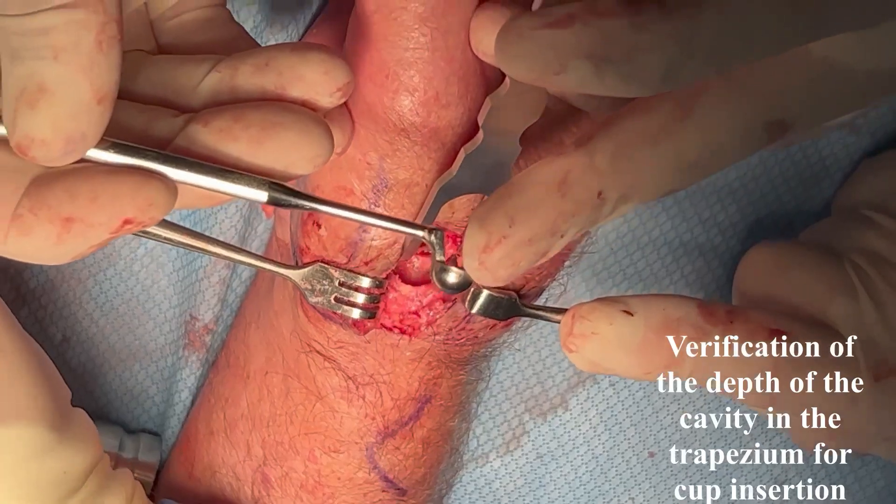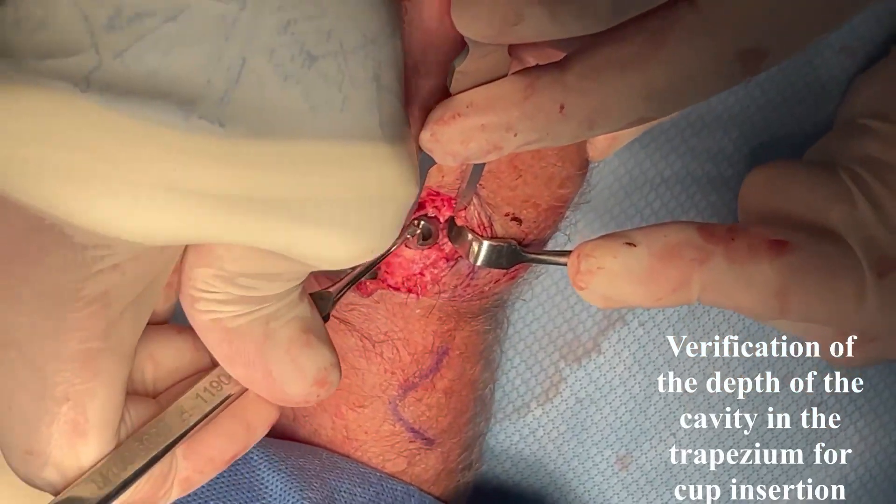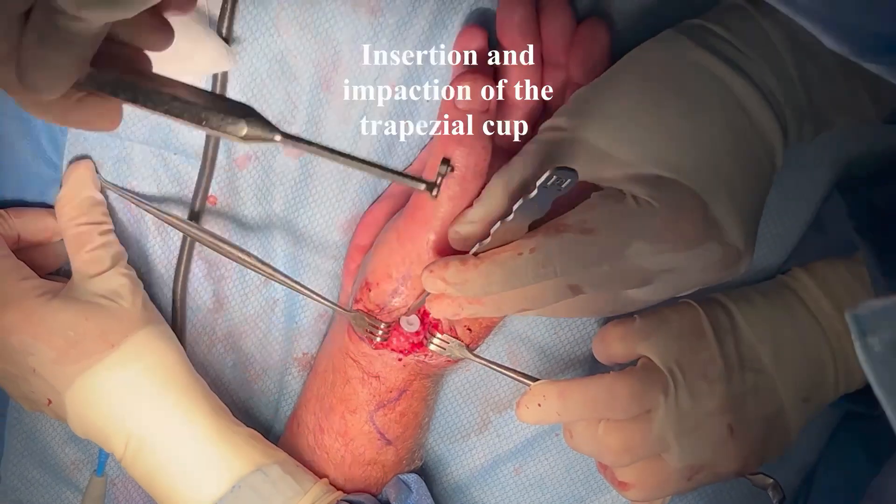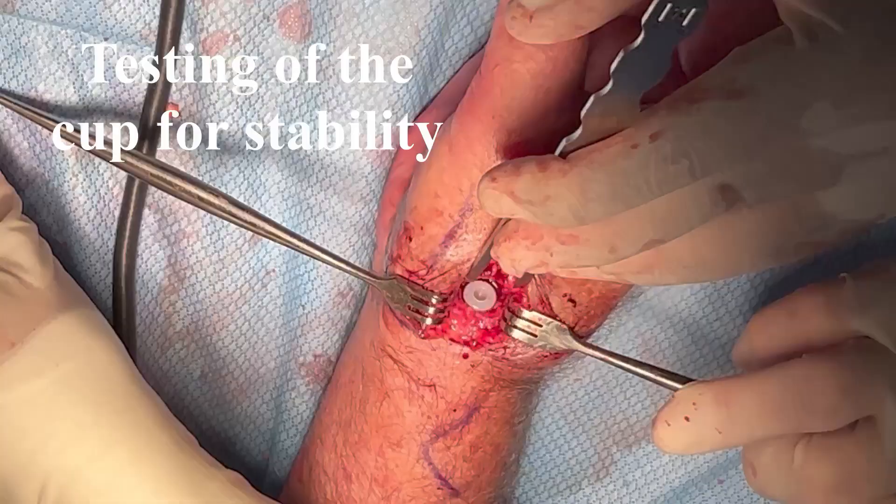The size of the trial stem is selected. The next step is the preparation of the trapezium. The depth gauge allows to choose the proper cup for implantation.